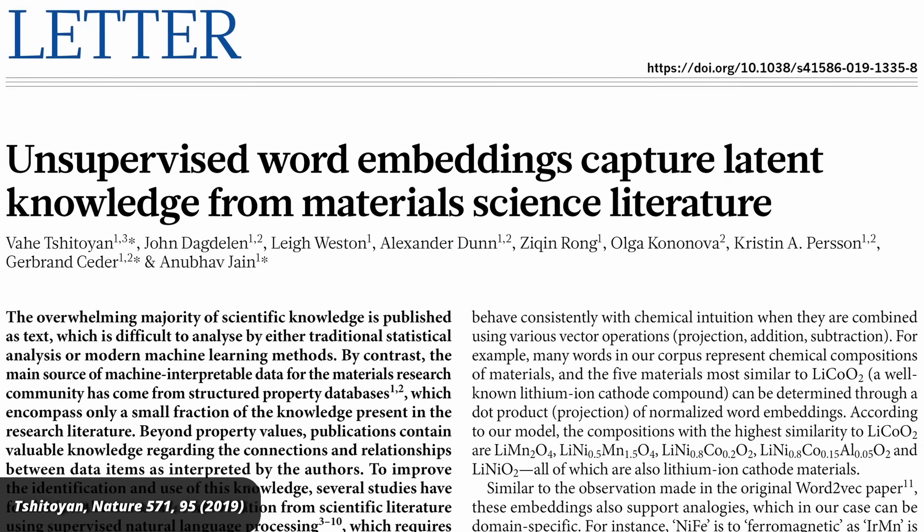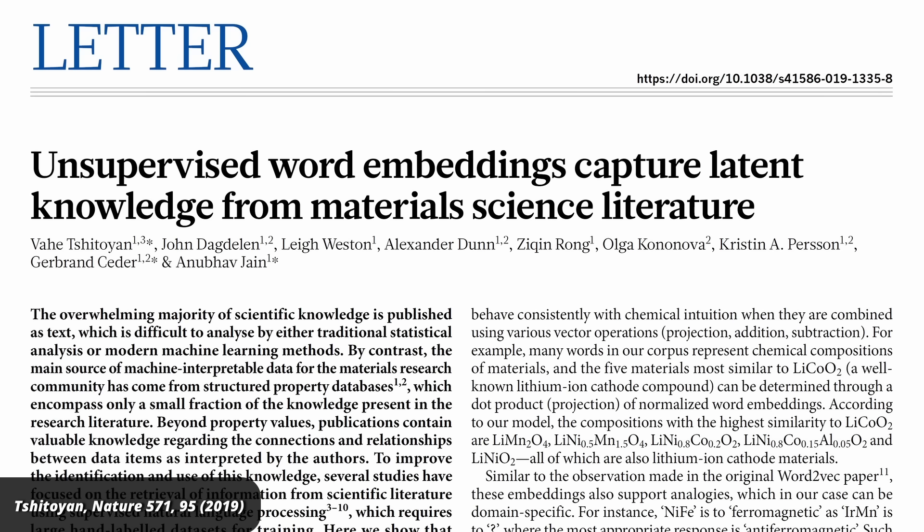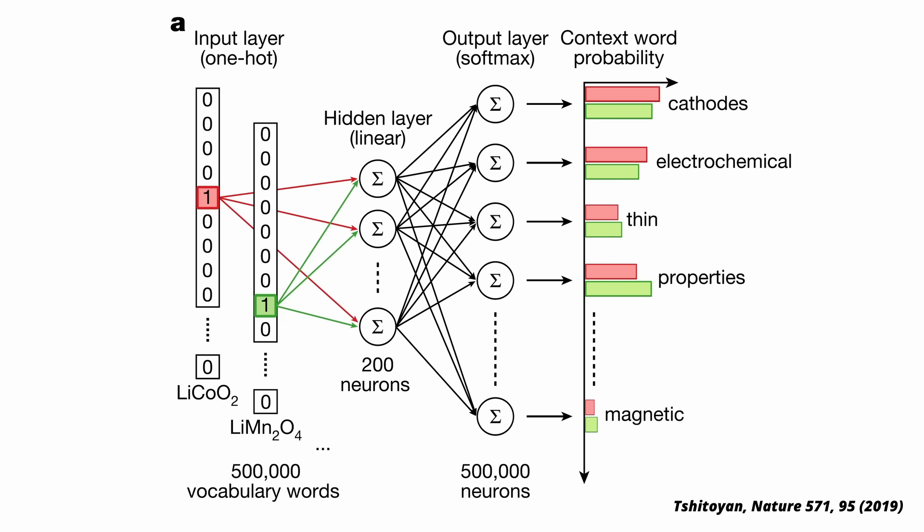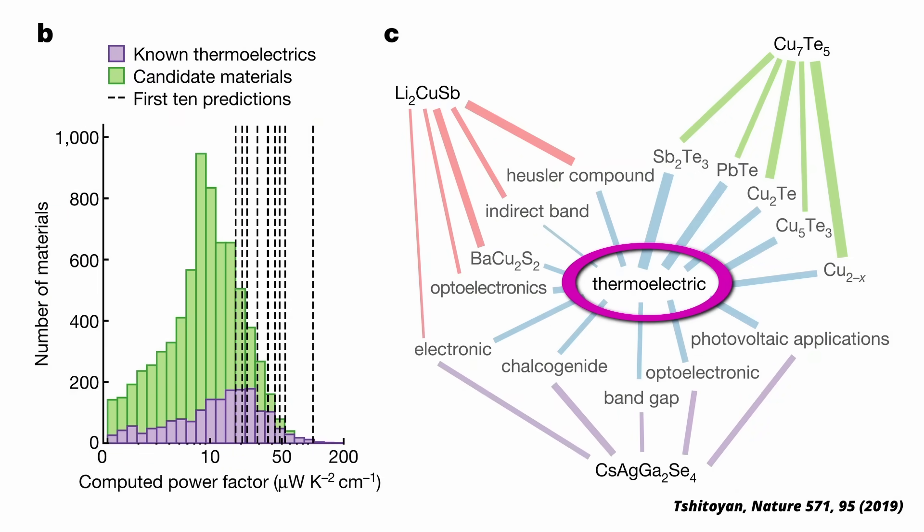A few years back, a group of researchers from California studied the material science literature with a simple neural network. They did not, like Swanson, look for relations between research studies by using citations, but they did a word analysis of paper abstracts. They found that a number of thermoelectric materials were associated with the word thermoelectric before anyone knew they were thermoelectric. The knowledge was in the word relations of the literature before any human noticed.